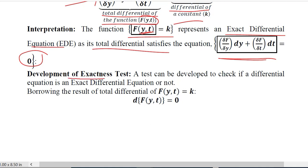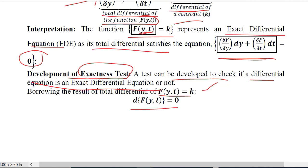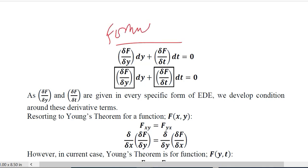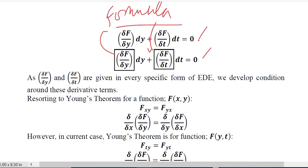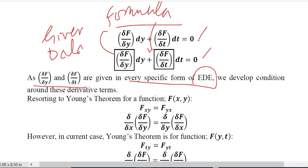There is a test for checking if an equation is actually an exact differential equation, and we are going to develop this test. If a differential equation is exact, we consider its total differential set equal to 0. The left-hand side uses the total differential formula as before, and 0 is carried on the right. These two partial derivatives — delta f over delta y and delta f over delta t — are the most important derivatives in the process and will be given in every specific form of an exact differential equation.